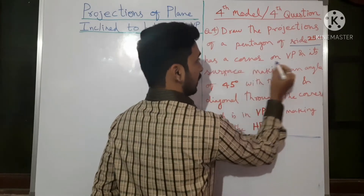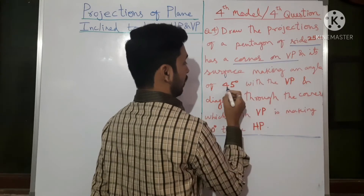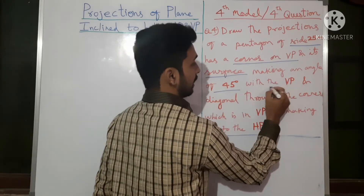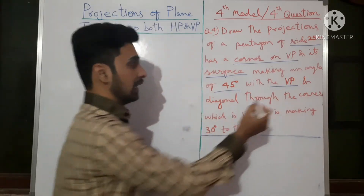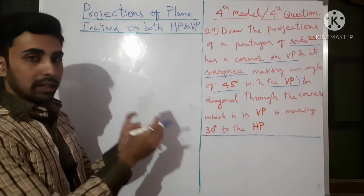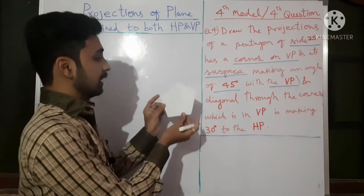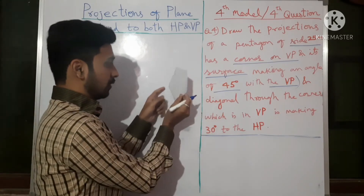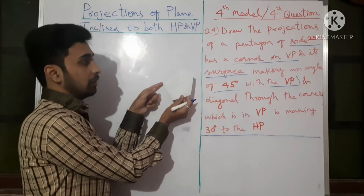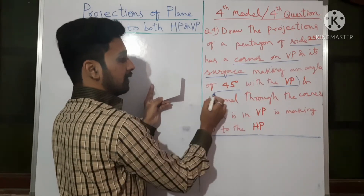Let us see what the fourth question says: we have a pentagon of side 25 mm, a corner is on VP, its surface making an angle of 45 degrees with VP. So first let us understand the question. One corner of the pentagon needs to be kept in the VP — the corner should touch the VP — and the surface makes an angle of 45 degrees with VP.